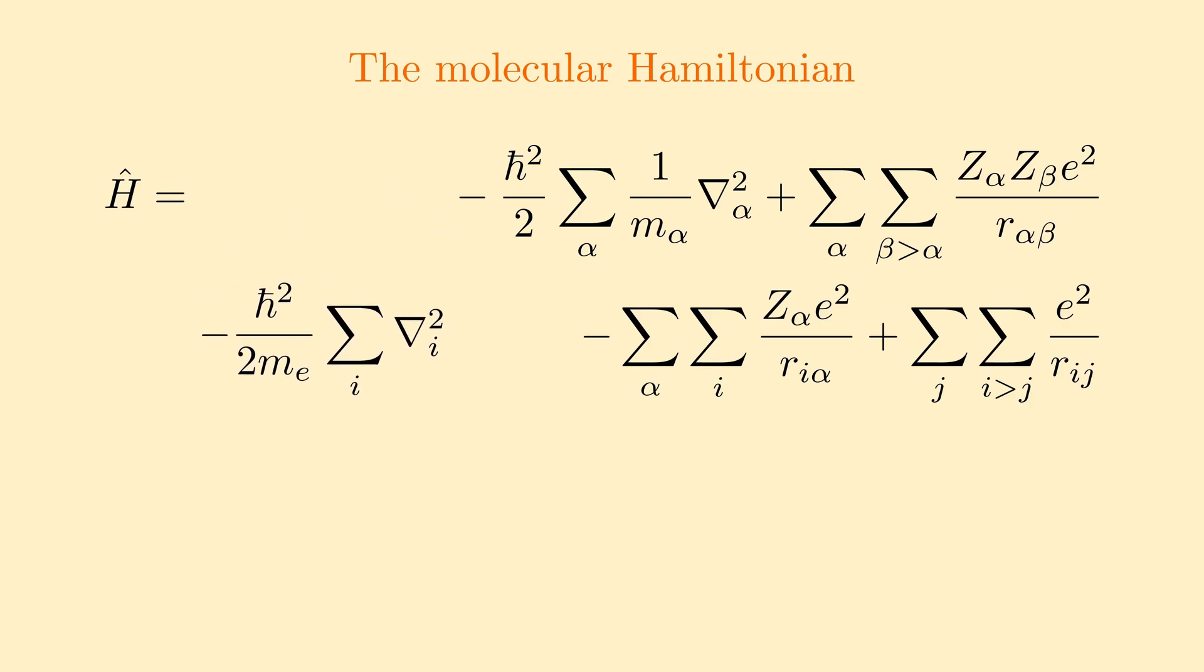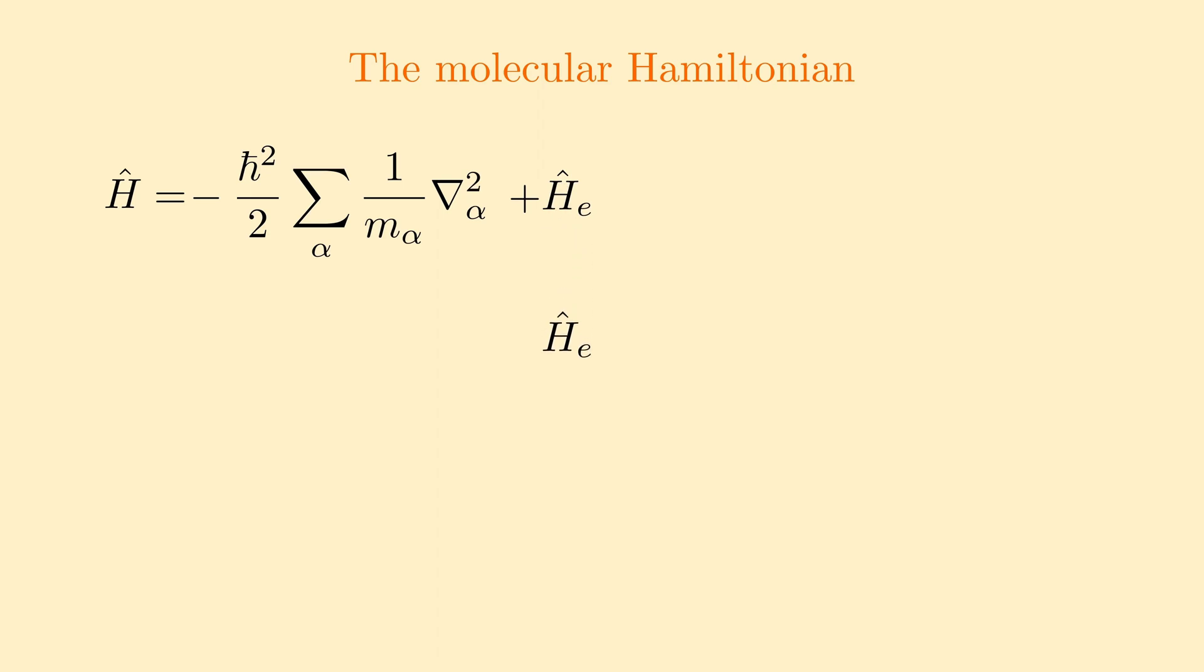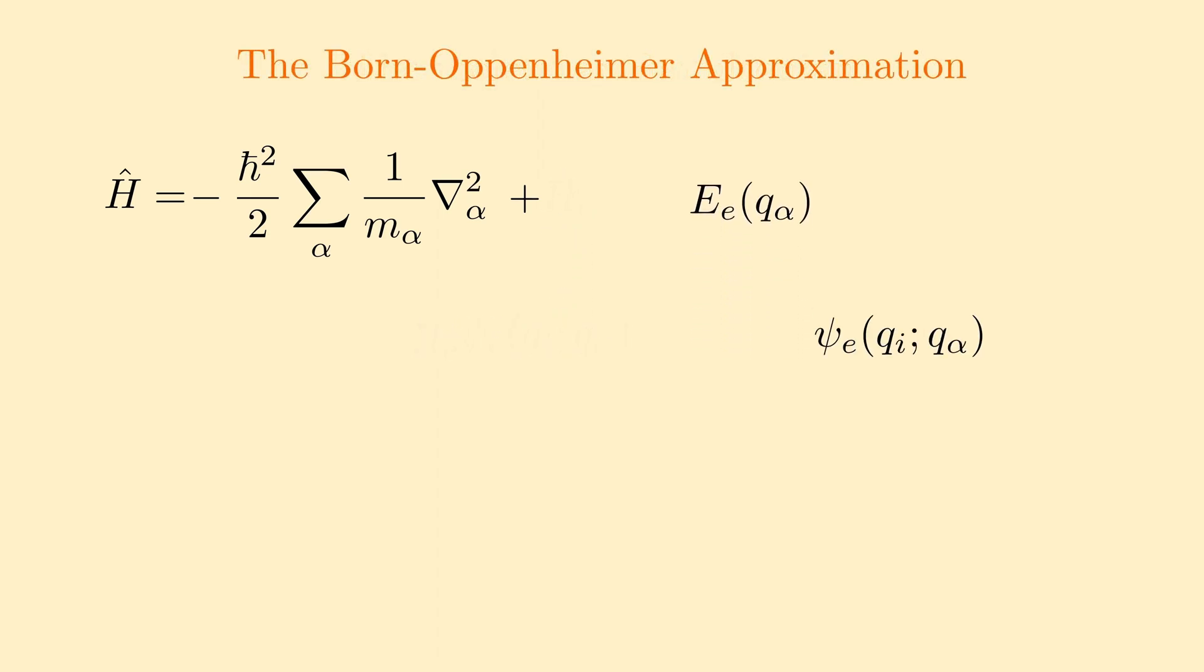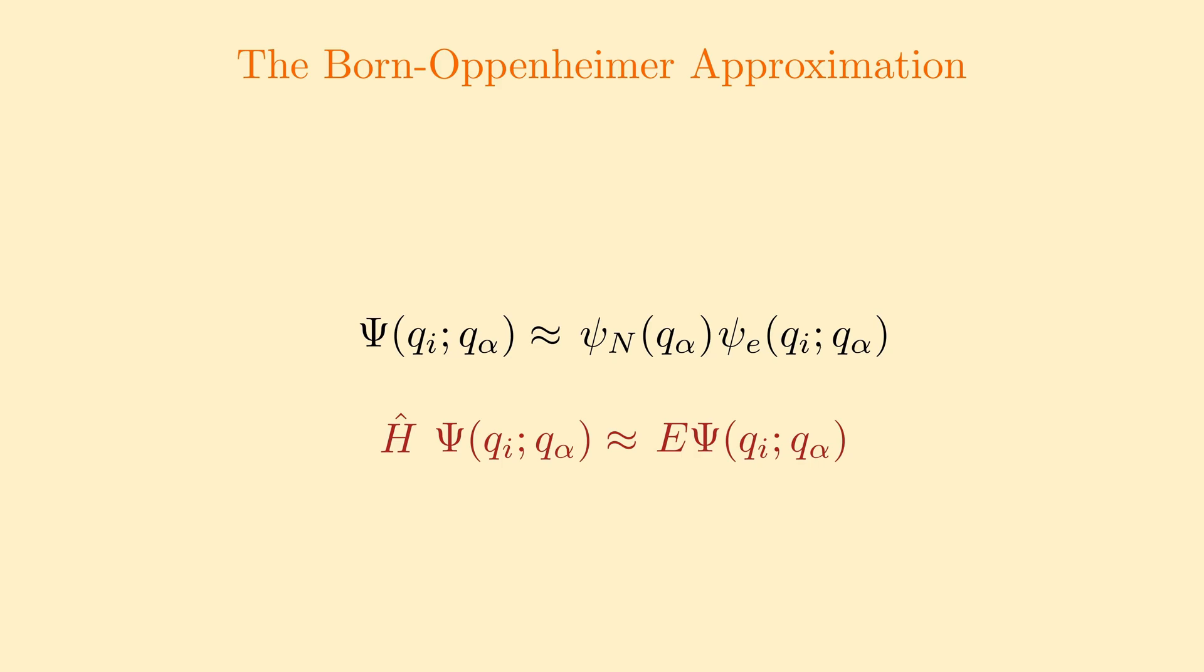Fortunately, the work of Oppenheimer and Born gave us a very accurate simplifying approximation that allows us to speed up and calculate the energy levels and wave functions of molecules that would otherwise be too difficult to calculate.